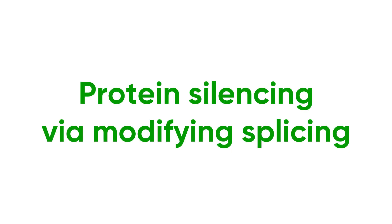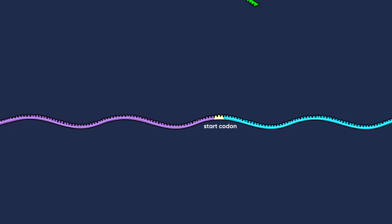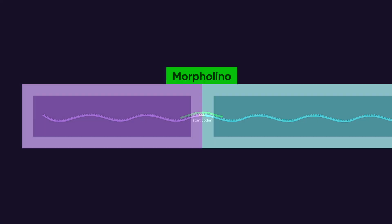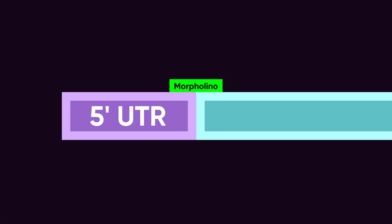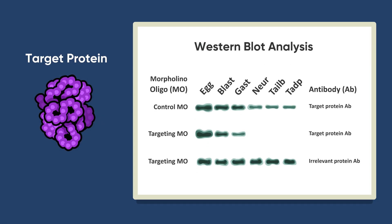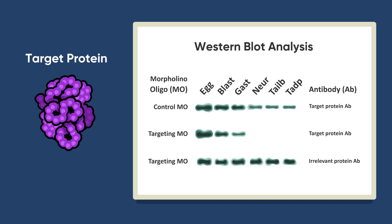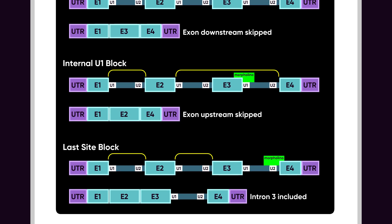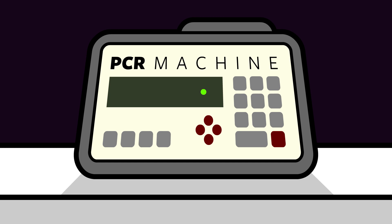Protein silencing via modifying splicing. As shown in a previous animation in this series, the simplest way to silence gene expression with a morpholino is to block translation. To do that, you would target the start sequence or 5' untranslated region in a mature mRNA. That said, this is not always possible. To check if such a silencing experiment is working, you often need a protein-specific antibody for Western blot analysis. If such an antibody doesn't exist, silencing by modifying splicing is a powerful alternative. Though silencing by modifying splicing takes a bit more planning to set up, the effectiveness of the silencing experiment can be easily tested with reverse transcriptase PCR.